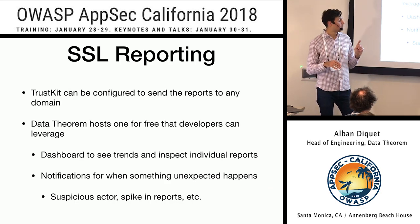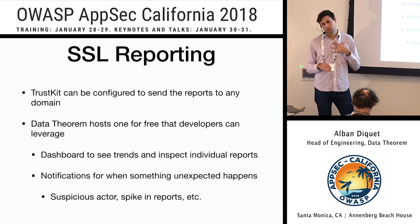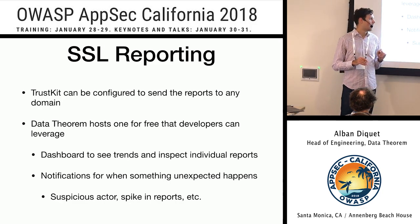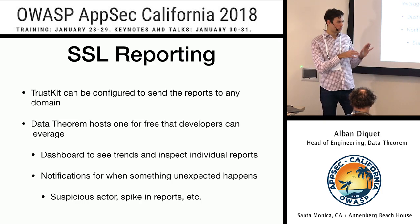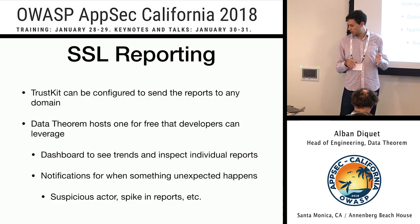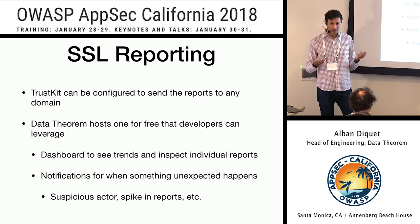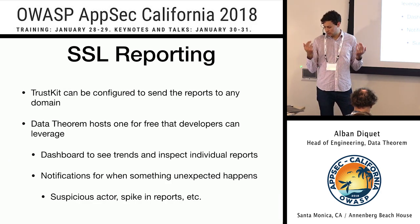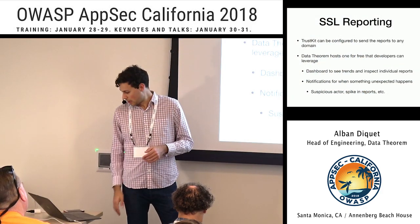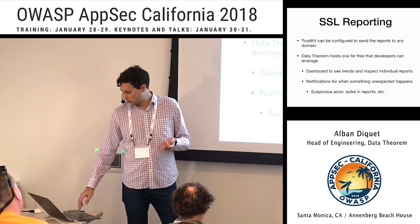When you enable that in TrustKit, you have the option to send the reports to our server, which is hosted for free. If you enable that as a developer, you get access to a dashboard showing you details. The whole idea of this reporting is that you're able to tell when something's happening, how many of your users are getting problems with their TLS connections, and even see spikes in reports — meaning something's happening somewhere in the world.